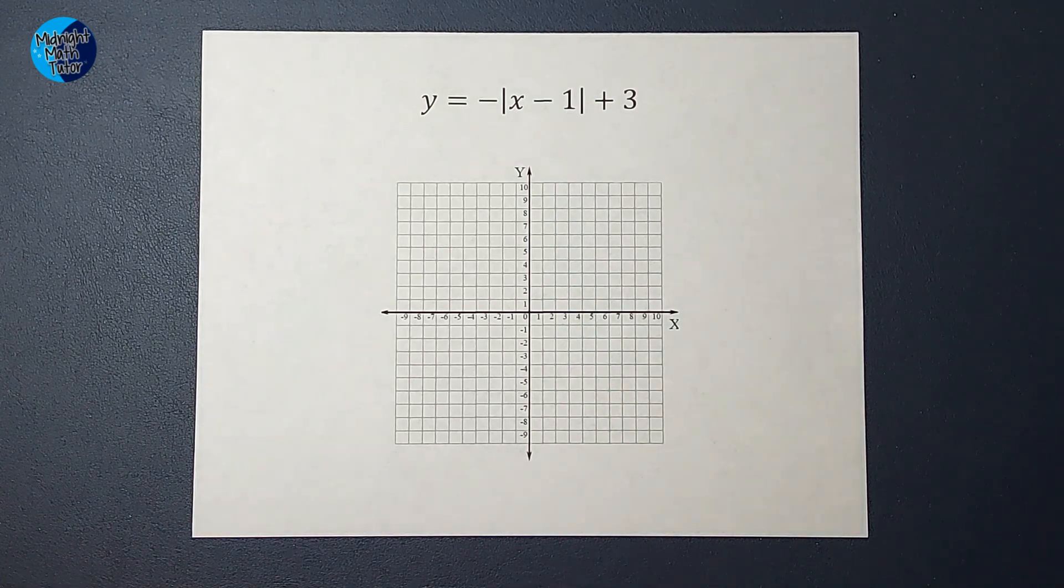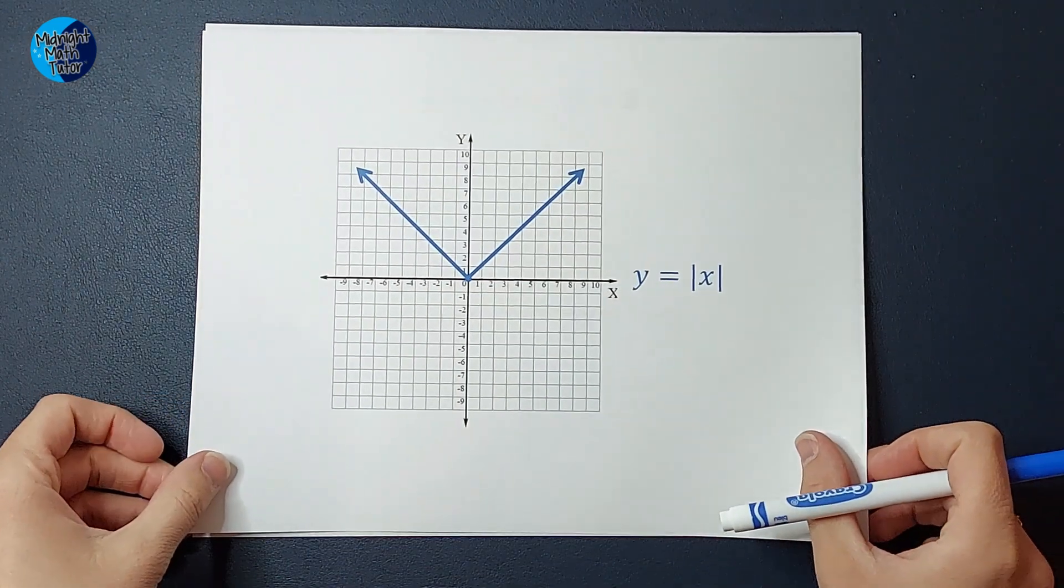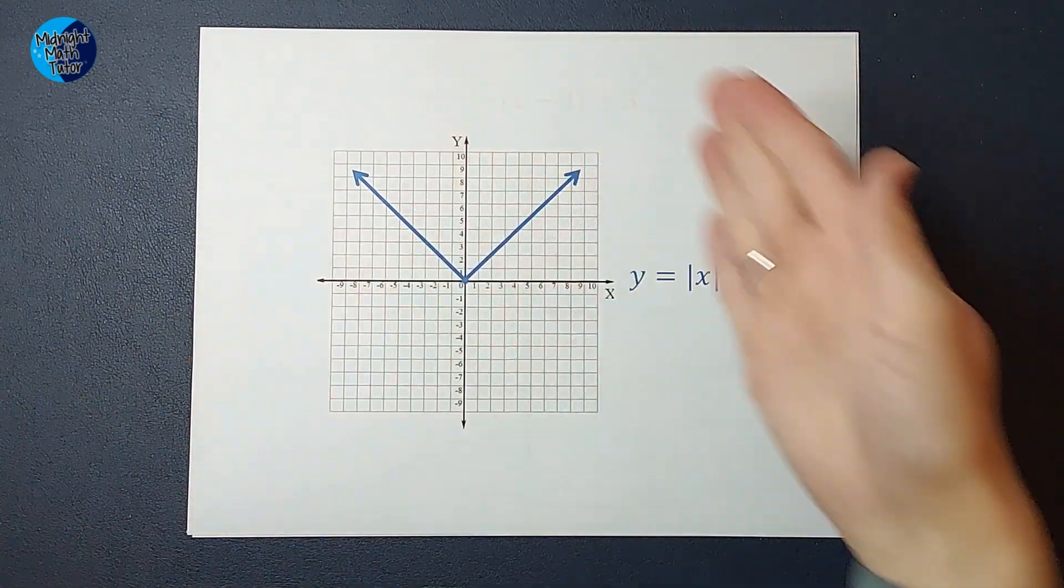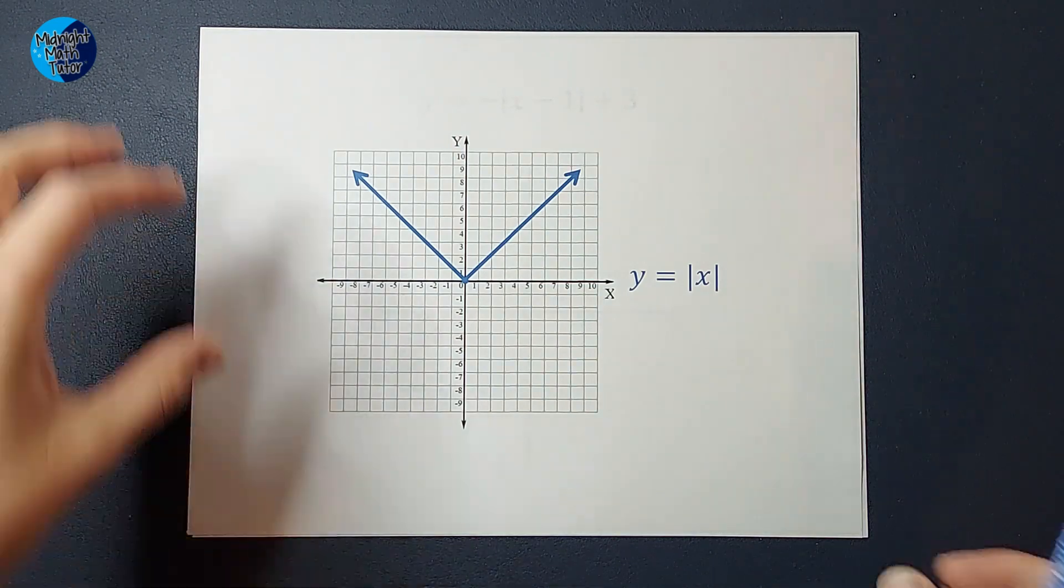Cool thing about when we do this is we like to reference what we call a parent graph. So if you were just being asked to graph y equals the absolute value of x, this is what your graph would look like.